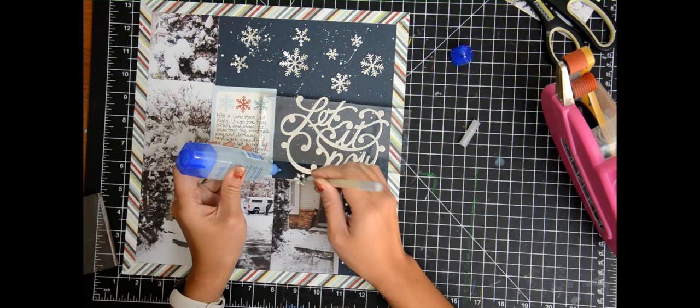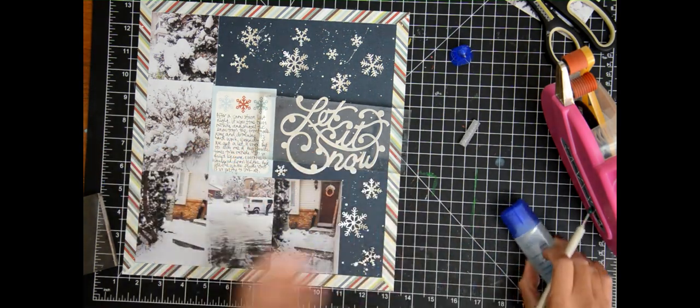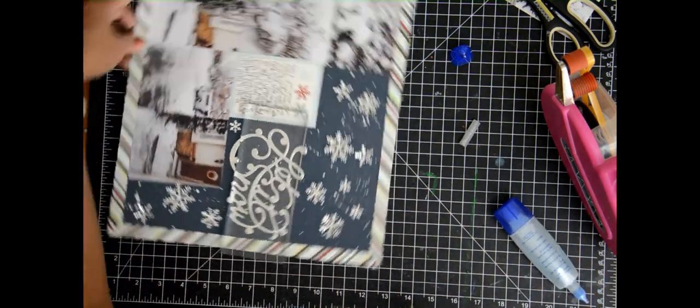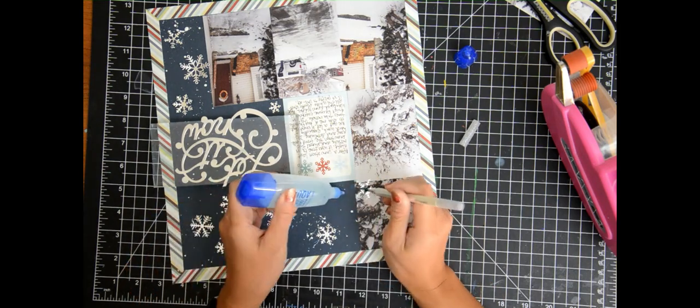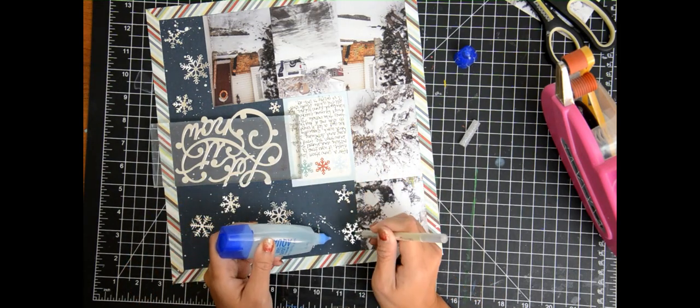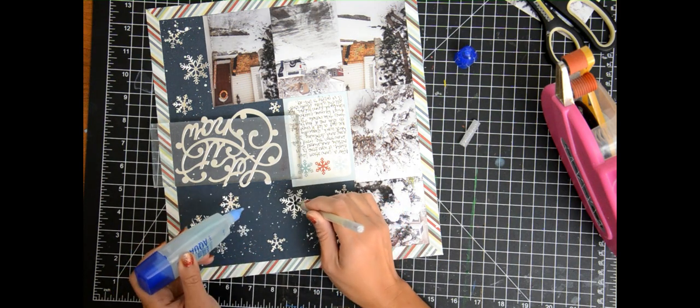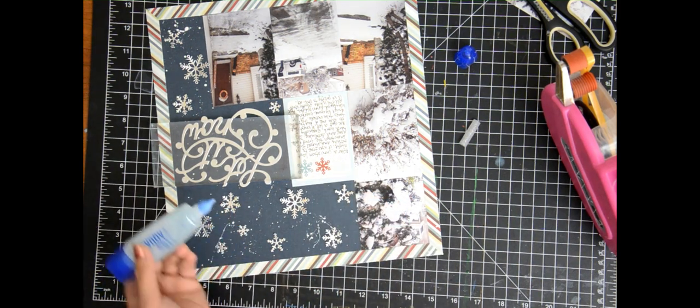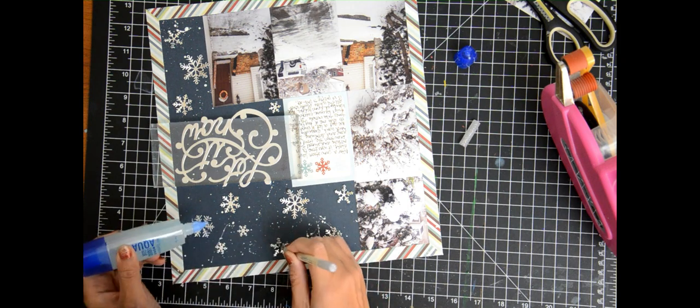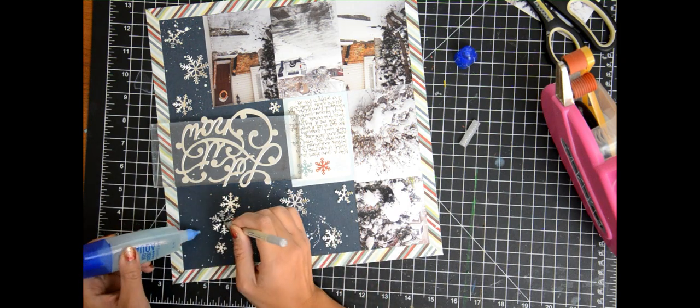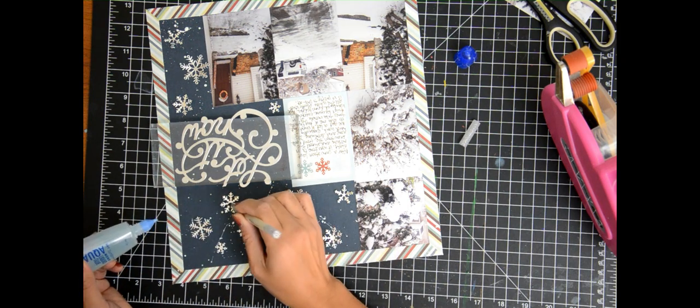So now I'm going to finish off the layout by just adding or gluing these snowflakes all around my background. You don't really see my background that much with the splatters, but the snowflakes definitely gives away the theme of the layout. Well, of course the photos as well, but everything else matches with the theme of the layout and I like that.